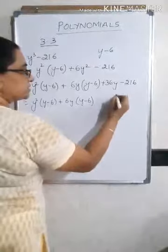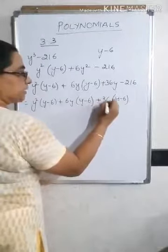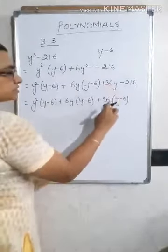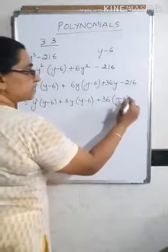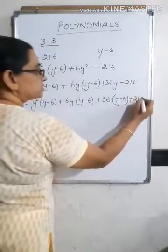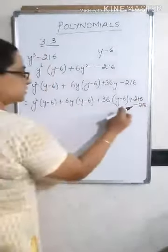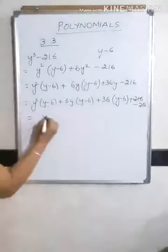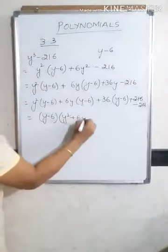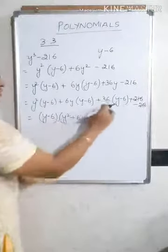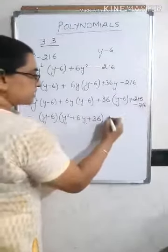Next, express 36y in terms of y minus 6. Write y minus 6 and multiply by 36: 36 times y gives 36y, but 36 times minus 6 gives minus 216. Since it is minus, write plus 216. The original minus 216 is repeated as it is. These two terms — plus 216 and minus 216 — cancel each other, giving remainder 0.